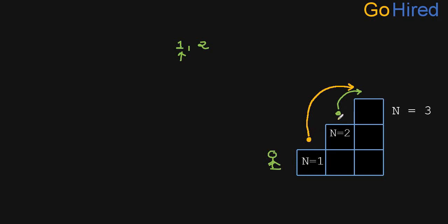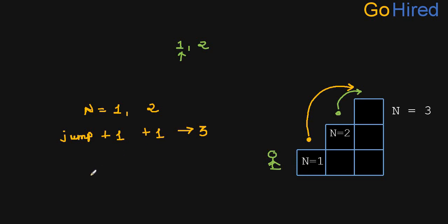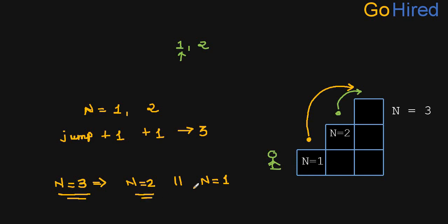If you are taking a jump of 2 from 1 then you can reach to 3, and if you are taking a jump of 1 then you need to be at level 2. So to reach to 3 you need to be either present at 1 or at 2. The total number of ways to reach to 3 is the sum of total ways to reach to 2 plus total ways to reach to 1.